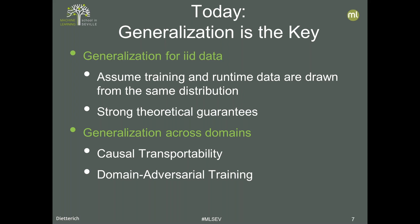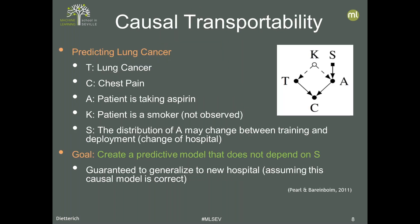I want to give a sense of two leading-edge techniques for generalizing beyond the stationary IID case. The first is causal transportability. Many of you may be aware of Judea Pearl's work in causality — I recommend his book, The Book of Why. It's based on building causal diagrams. In this causal diagram, T stands for a patient having lung cancer, A for taking aspirin, and C for experiencing chest pain. If they have cancer but are also taking aspirin, they might not have chest pain — but the absence of chest pain doesn't mean they don't have cancer. So aspirin can block or mask the chest pain.